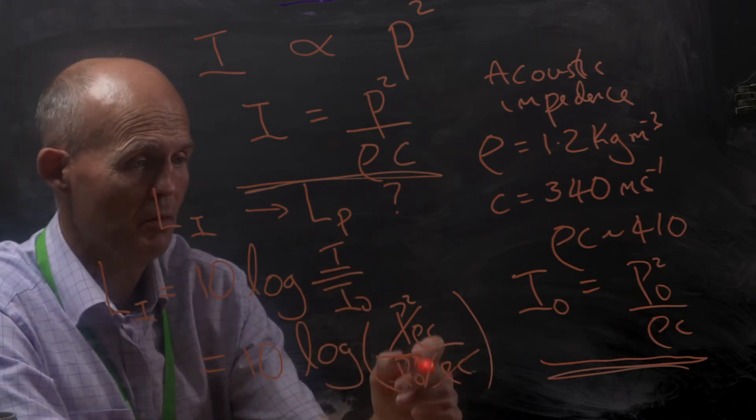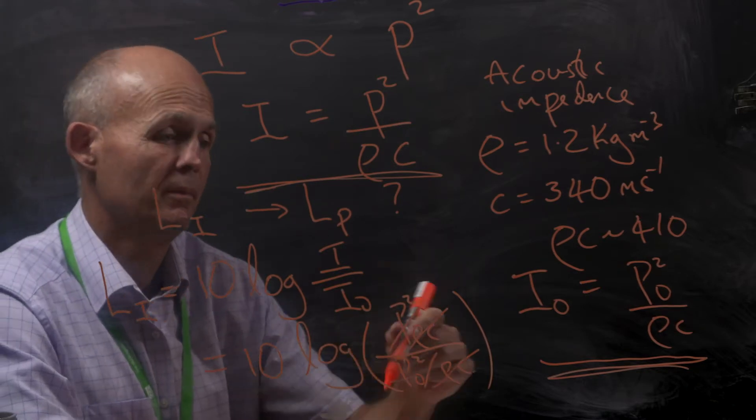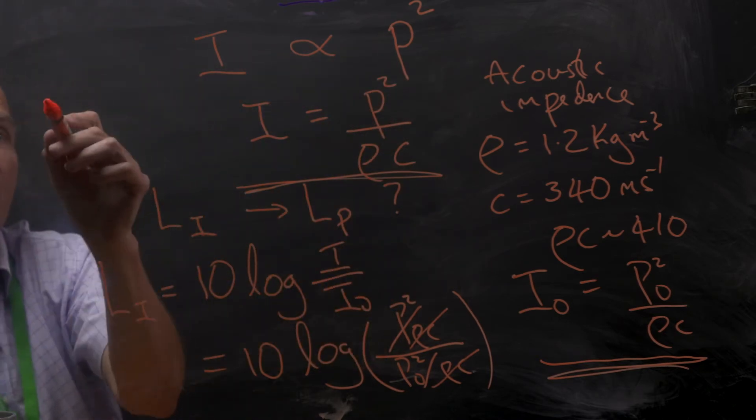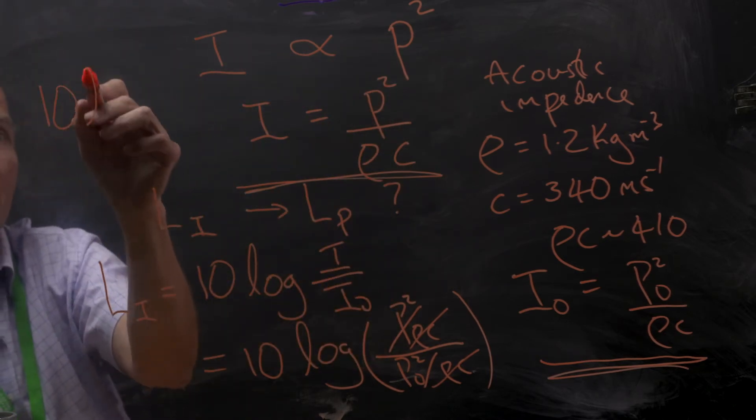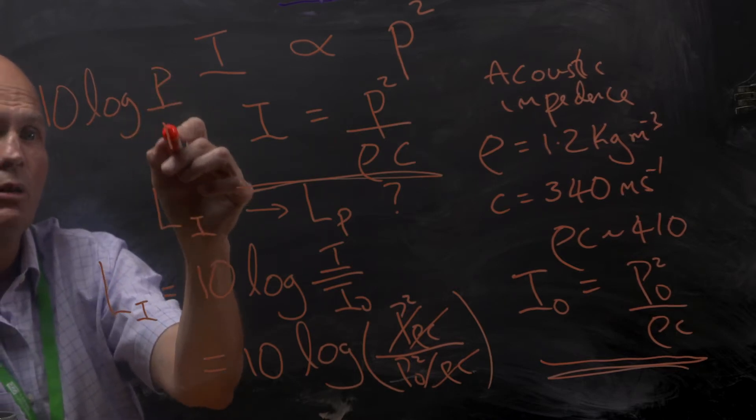The rho c's will cancel out, which therefore leaves us with, I'm sorry about this, we're going to have to go up onto this side here. That leaves us with 10 log of P over P naught.